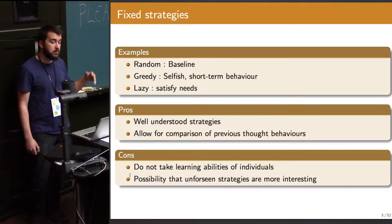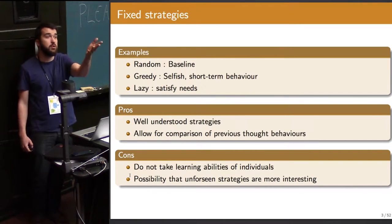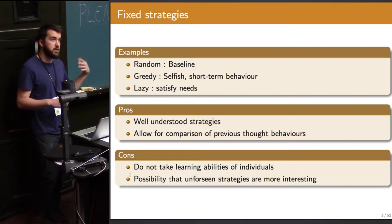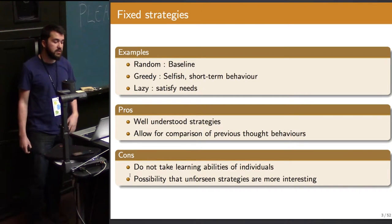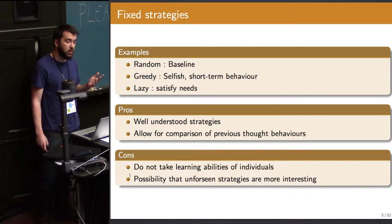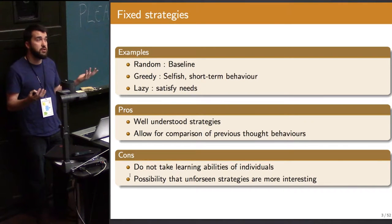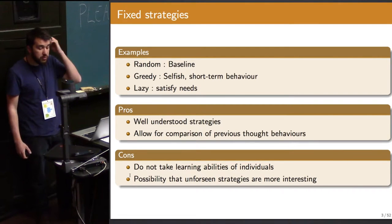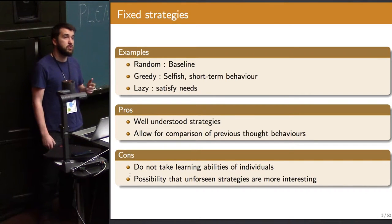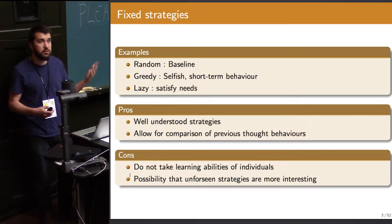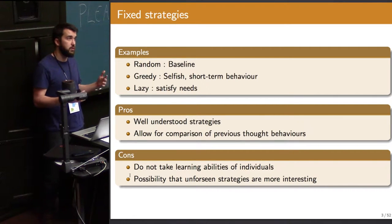There are some examples of behaviors I had planned to speak about, but the example we saw for the last 20 minutes is perfect. This is the kind of thing we think about with fixed strategies — something we have written down ourselves and expect agents to behave in a certain way. The advantage is that we understand quite well what the agents are doing, and it allows us to compare different types of strategies.